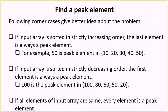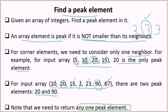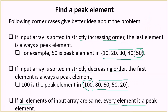Let's discuss some corner cases. If the array is in strictly increasing order, the last element will always be a peak element and none of the previous elements will be. If the array is in strictly decreasing order, the first element will be a peak element. If all the elements are the same, then every element is a peak element, because we check that elements should not be smaller than their neighbors — they can be equal and still be a peak element.